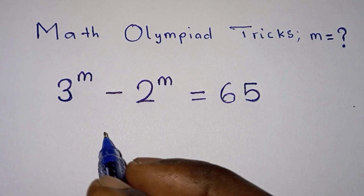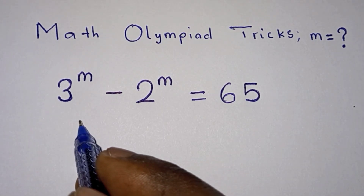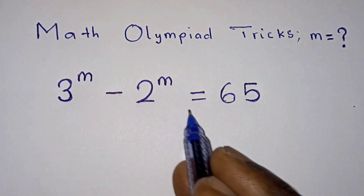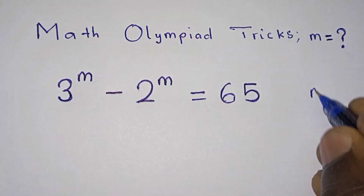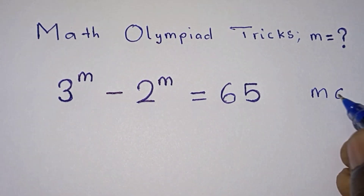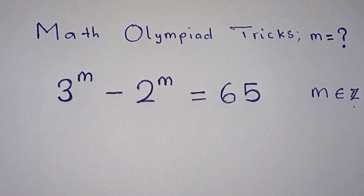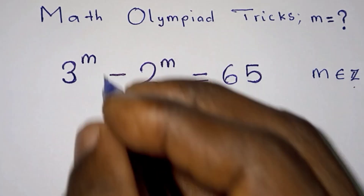Hello everyone. In this video we have this math olympiad problem: 3 to the power m minus 2 to the power m is equal to 65, and we have to find the value of m, where m is an integer. So how do we solve this? Let's get started.